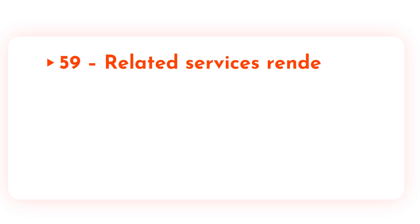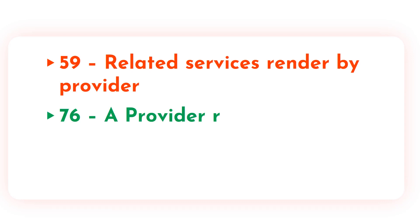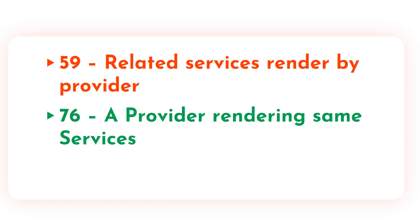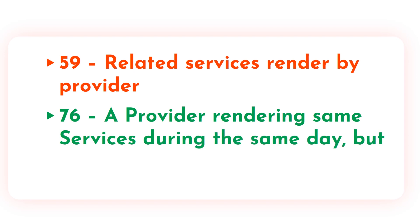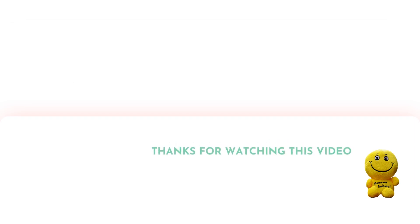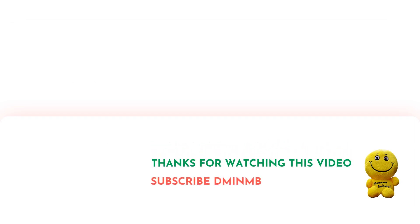Modifier 59 is used when distinct or unrelated services are rendered by a provider. Modifier 76 is used when a provider renders the same services during the same day but in separate sessions. Modifier 77 is used when the same services are rendered by a different provider.